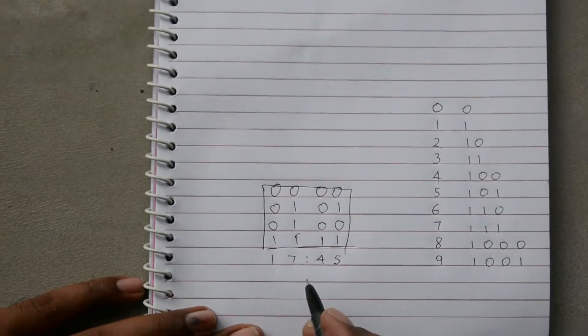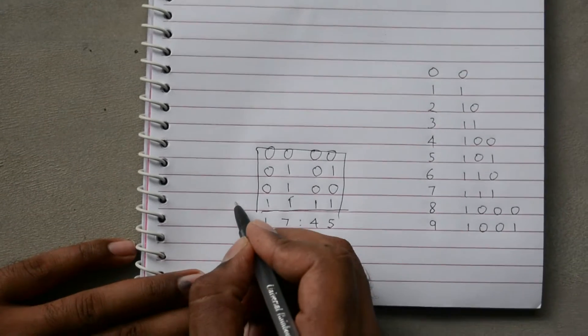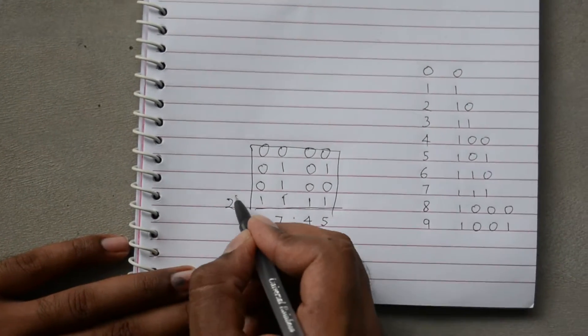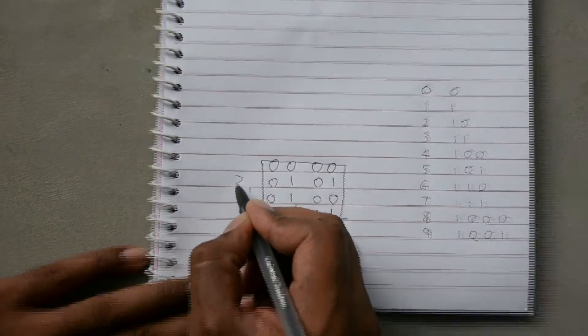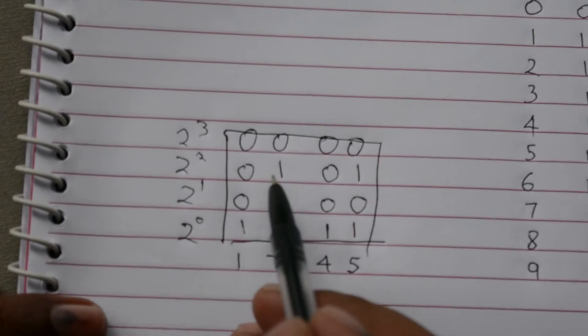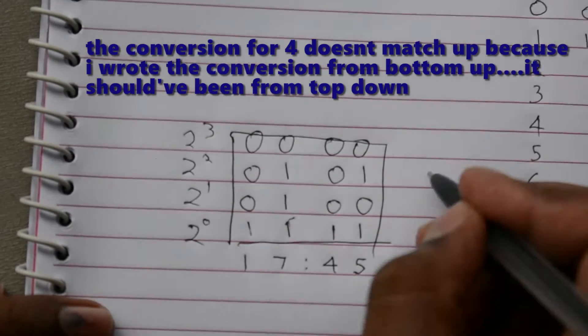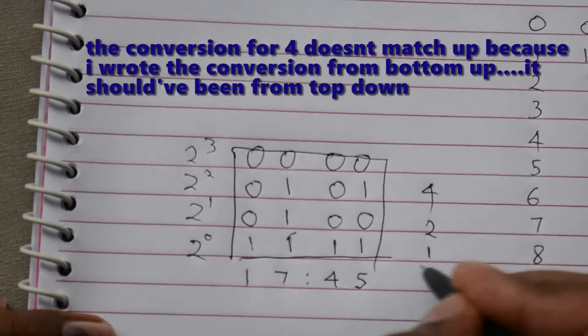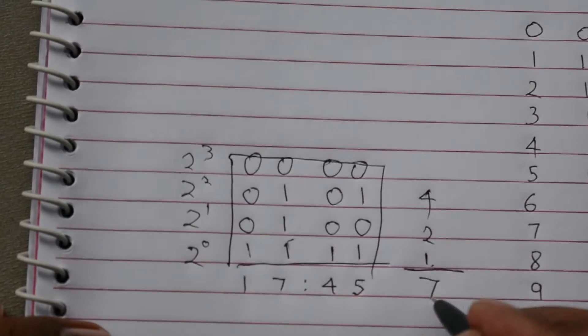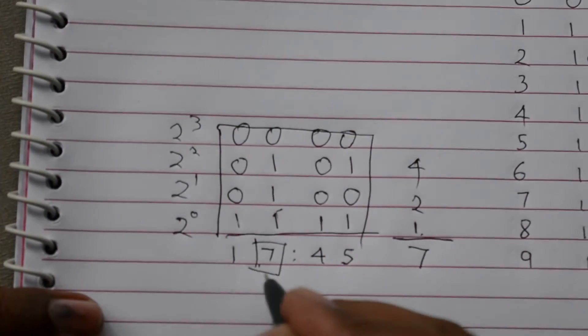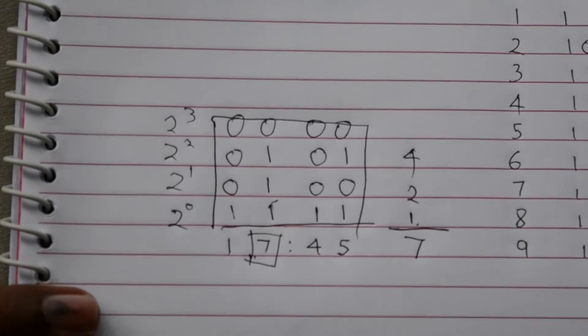So another easy way to decode this would be, consider the first row as 2 power 0, 2 power 1, 2 power 2, and 2 power 3. So here 2 power 2 would be 4, 2 power 1 would be 2, 2 power 0 would be 1. So adding these up, it will sum up to 7, that denotes this 7. So that's how you decode a binary clock.